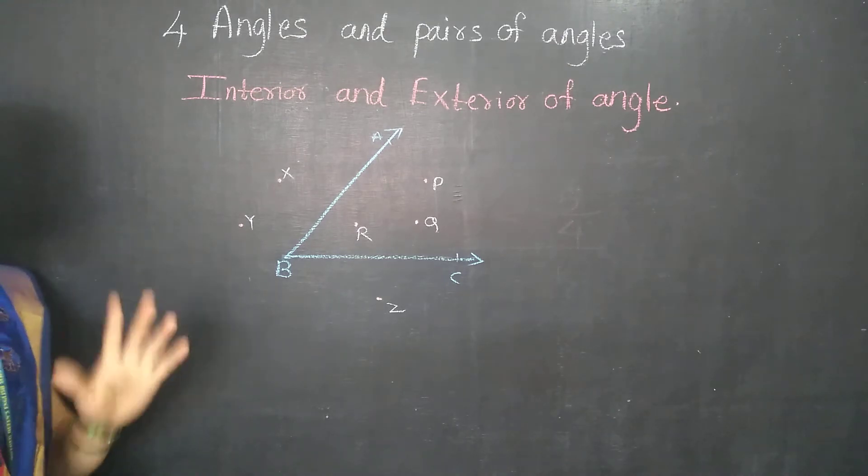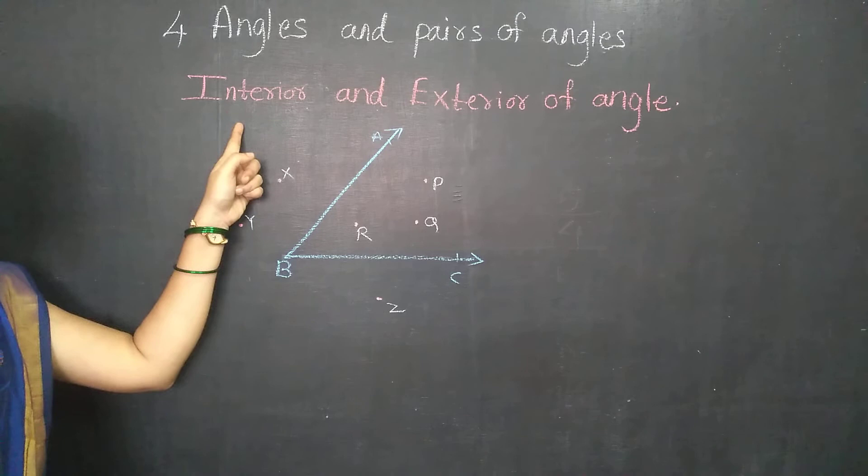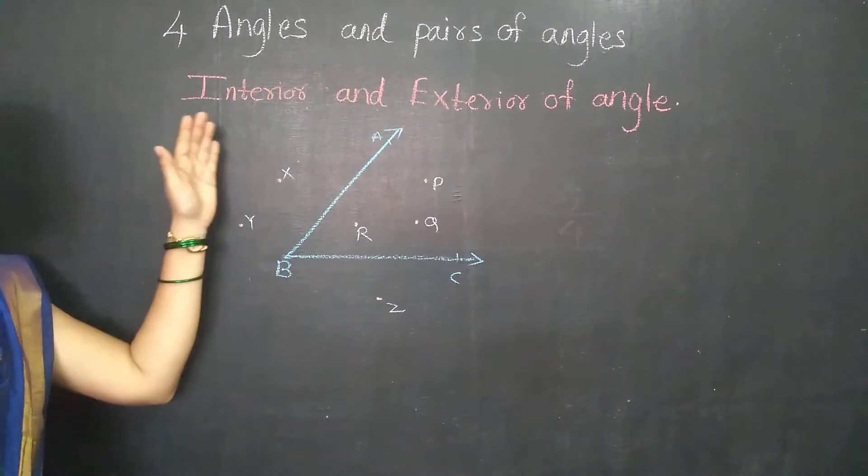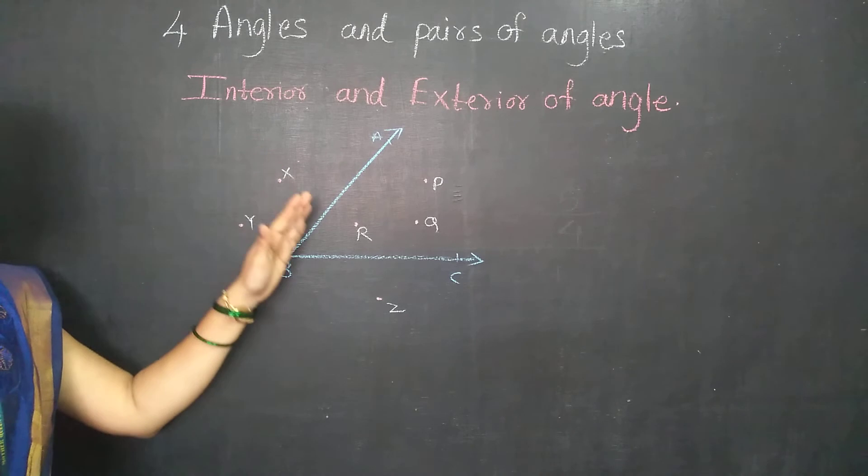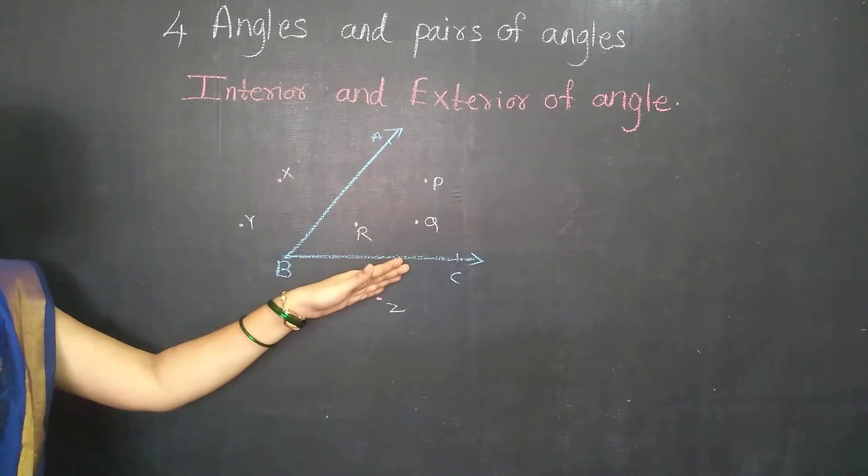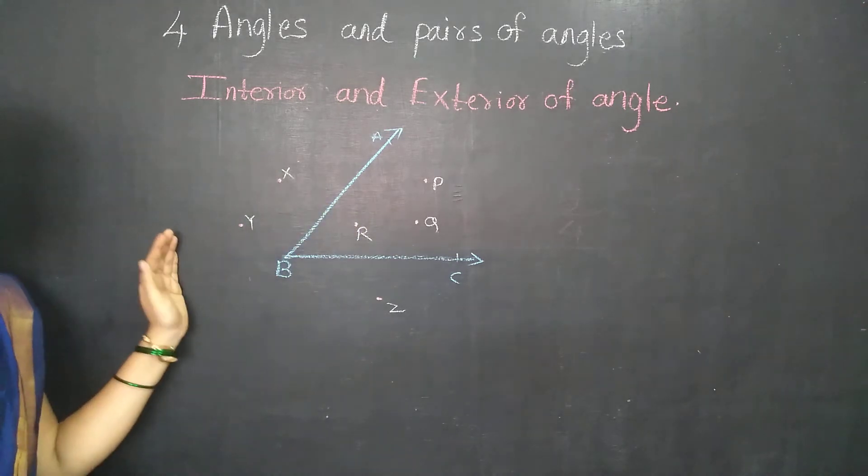Now, what are the interior? The main interior means inside and exterior means outside. So, very easy concept. You only have to tell which points are inside the angle and which points are outside the angle.